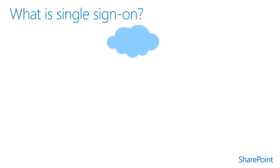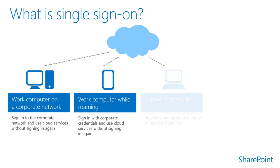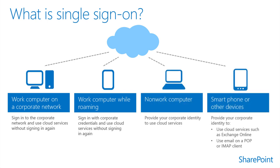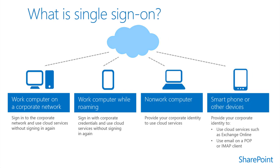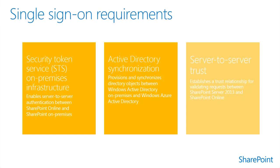Single sign-on gives users seamless authentication, authorization, and access across SharePoint Server on-premises and SharePoint Online. In modules 1.1 and 2.1, we discussed the benefits of a hybrid SharePoint environment and the need to configure hybrid identity management infrastructures. In this module, we discuss configuring server-to-server trust. Later modules in this course discuss building on this infrastructure.